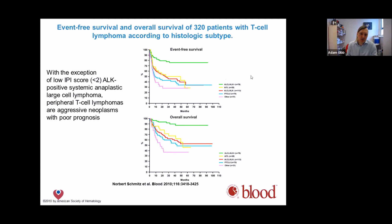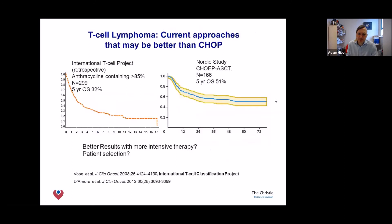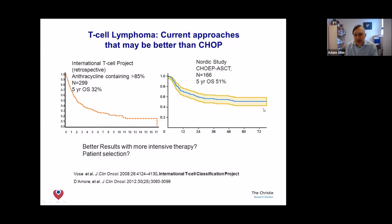We can apply prognostic indices to T-cell lymphoma and see that higher-risk disease has poorer survival than B-cell lymphoma. If you give a stem cell transplant in first remission after CHOP, you do get a more favorable looking curve — this is data from the Nordic group. However, these numbers are relatively small and the trial was not randomized, so it may not be possible to make direct comparisons between the transplant and non-transplant groups.